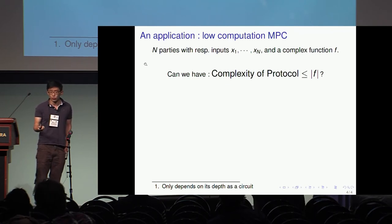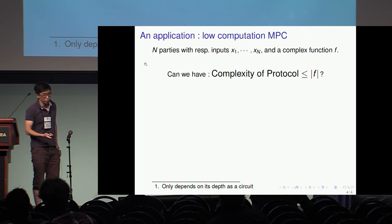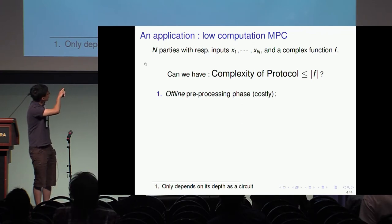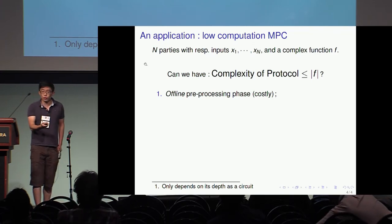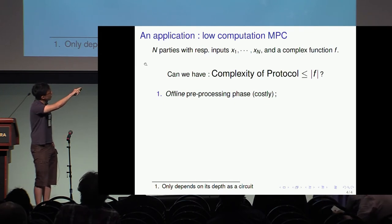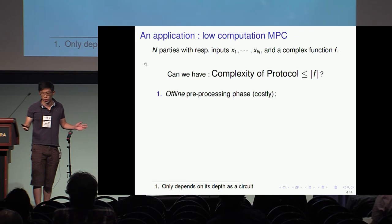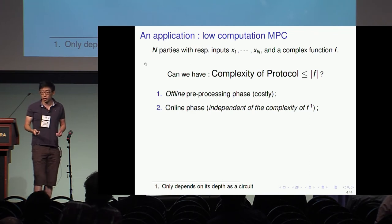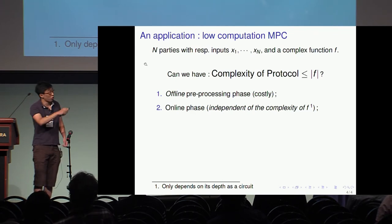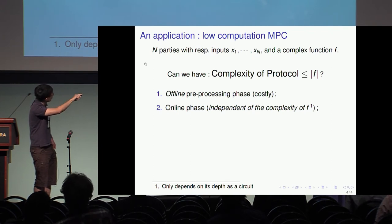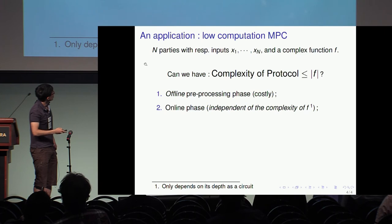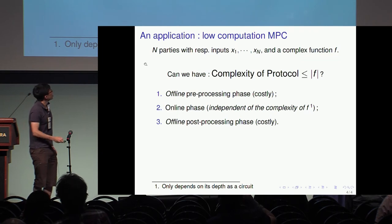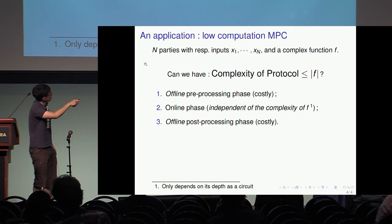That seems paradoxical at first, because you have to compute the function at some point, but we actually manage to achieve something somewhat similar. There's first an offline pre-processing phase, which consists of compressing the function f — everybody can do that offline; it's costly but we don't care. Then there's an online phase where people compute the ciphertext. As our laconic property suggests, this is small, so the online complexity of the protocol is small. Then people can individually decrypt the ciphertext. In the end, this gives an MPC where the online communication is small.